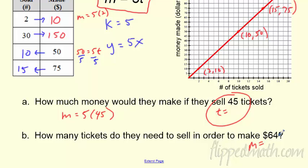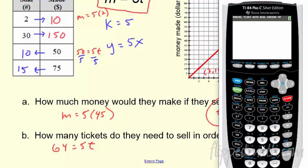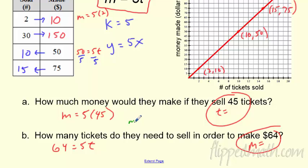Use that equation. m is 64 equals 5t and solve for t. Let's just have closure on this. What is 5 times 45? Well, we can type that into our calculator if you want to double check, if you don't want to do it by hand. So the amount of money I would need here would be $225 if I sold 45 tickets.